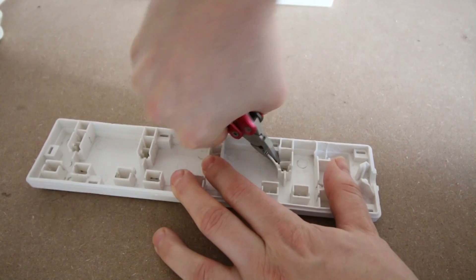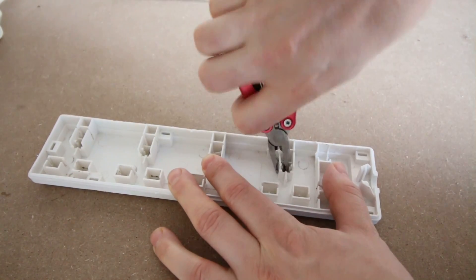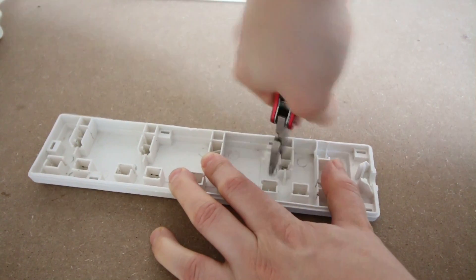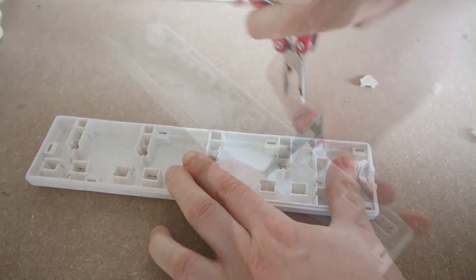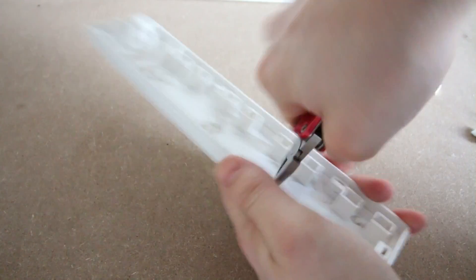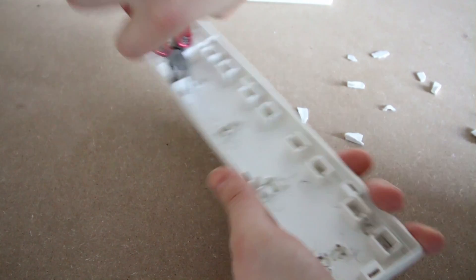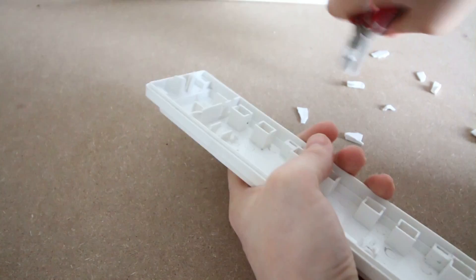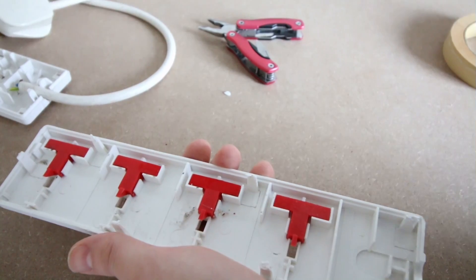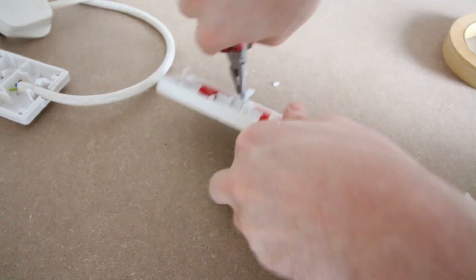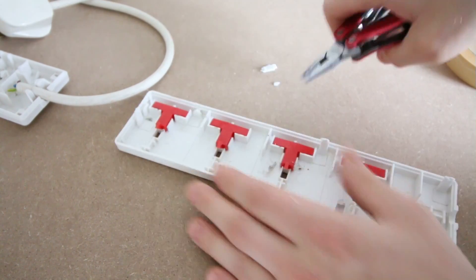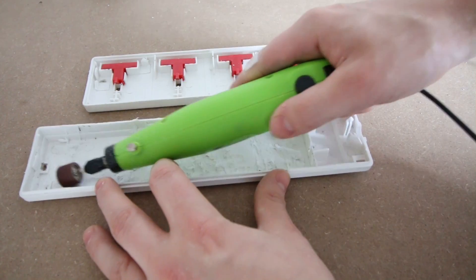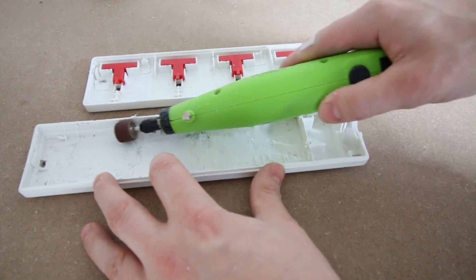Once that was done I used pliers to remove the thick inner plastic pieces. I also removed the clips on the upper section too. After that I used my rotary tool to sand down the leftover pieces.